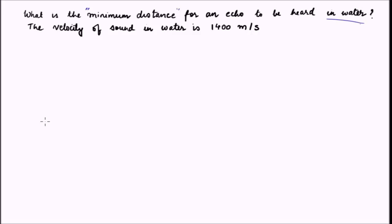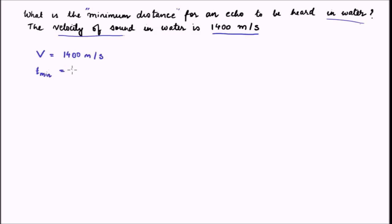The difference between this situation and the previous situation is the velocity of sound. In water, the velocity of sound is much faster — it is approximately 1400 meters per second, whereas in air it was roughly 340 meters per second. So with this background, let us try to solve this question. The velocity given is 1400 meters per second, and the minimum time gap between the original sound and the reflected sound should be 0.1 second for the human ear to perceive them differently.